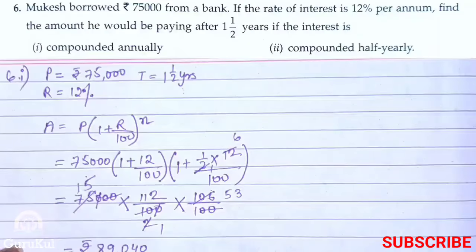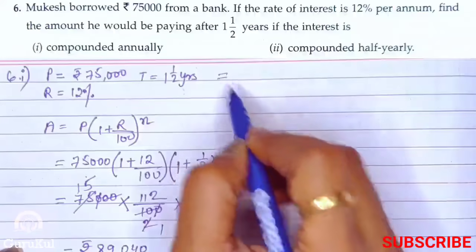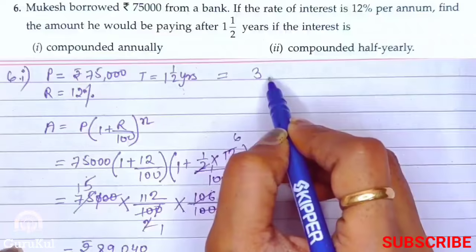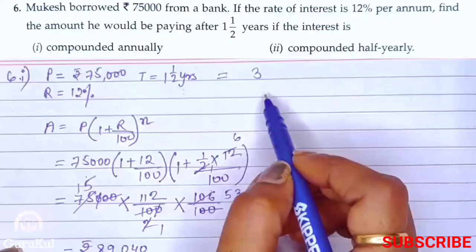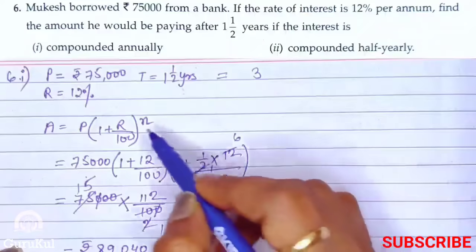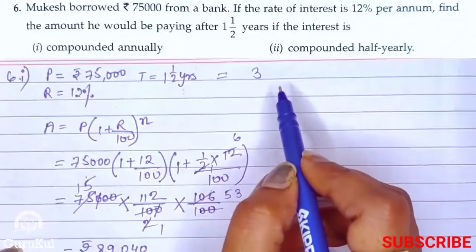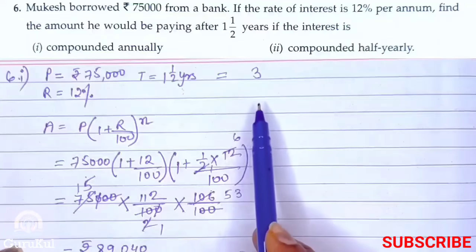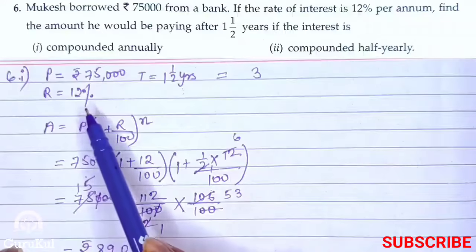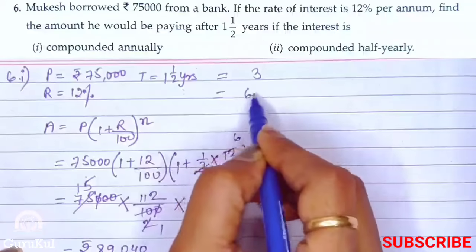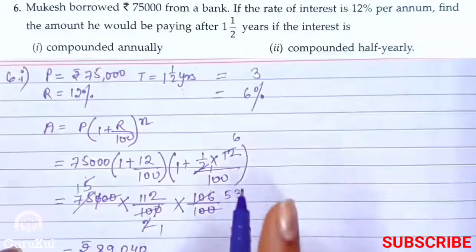For the second part, we find the amount if the interest is compounded half yearly, meaning after every 6 months. So the time becomes 3 (since in one and a half years we get three 6-month periods). And because interest is calculated half yearly, the rate is also halved — rate becomes 6%. Always keep this in mind: if compounded quarterly, the rate becomes one quarter.